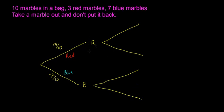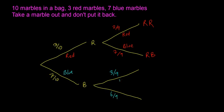For the second draw the numbers are different depending on the first result. If the first marble was red, there are now two red marbles and seven blue marbles left — nine marbles altogether. So the probability of getting another red is two over nine, and getting a blue is seven over nine. If the first marble was blue, there are now three red marbles and six blue marbles left — still nine total. So the probability of red is three over nine and blue is six over nine. This gives us four outcomes: red-red, red-blue, blue-red, and blue-blue.